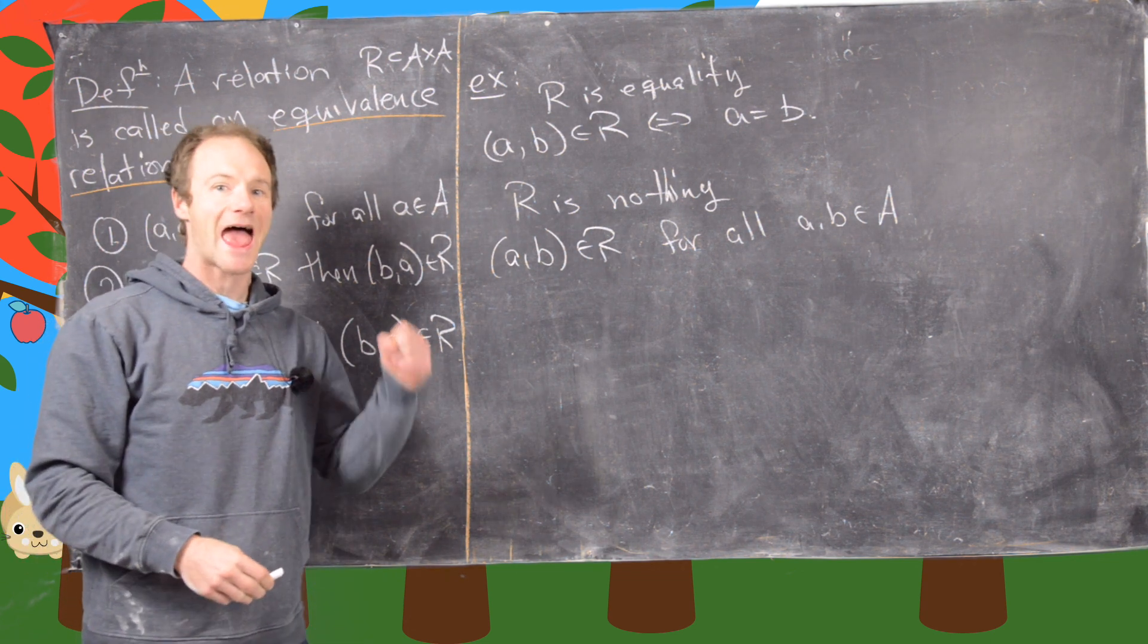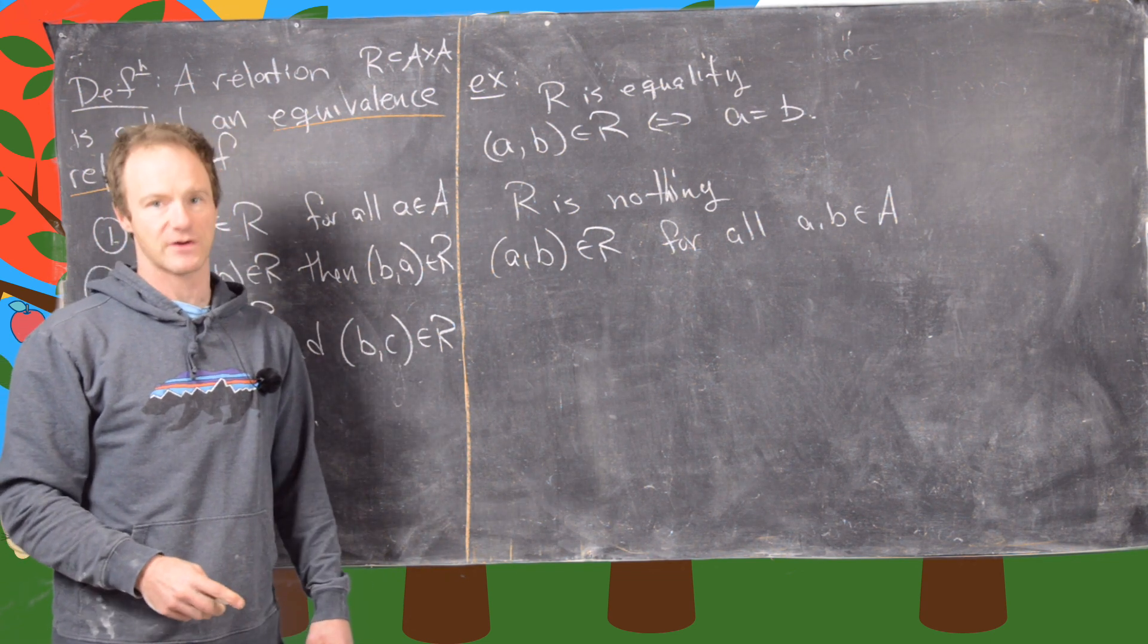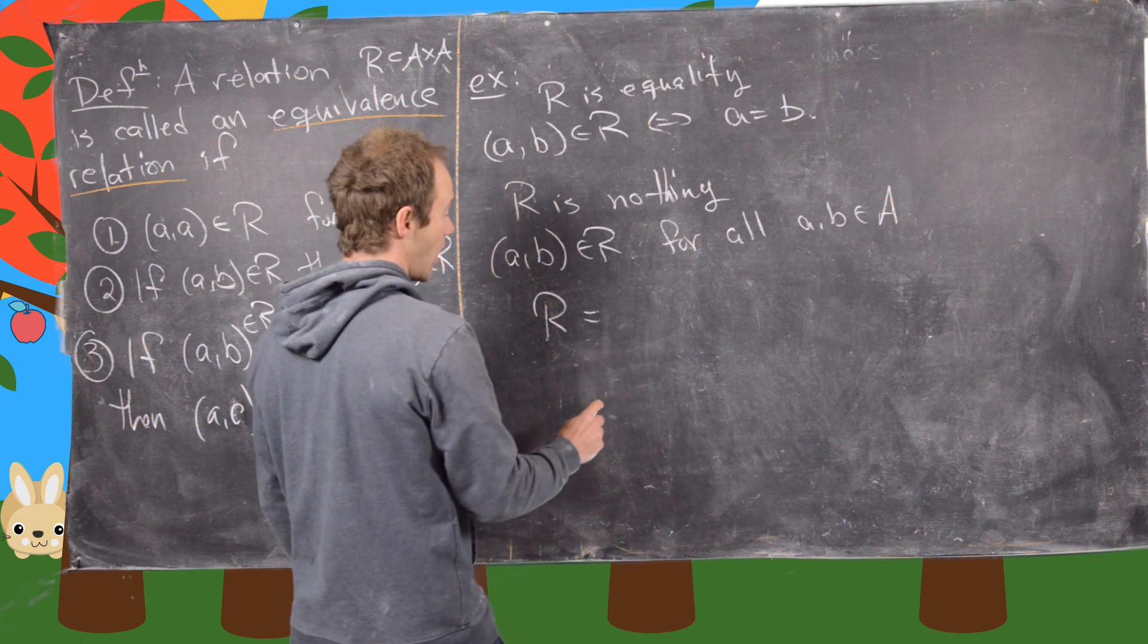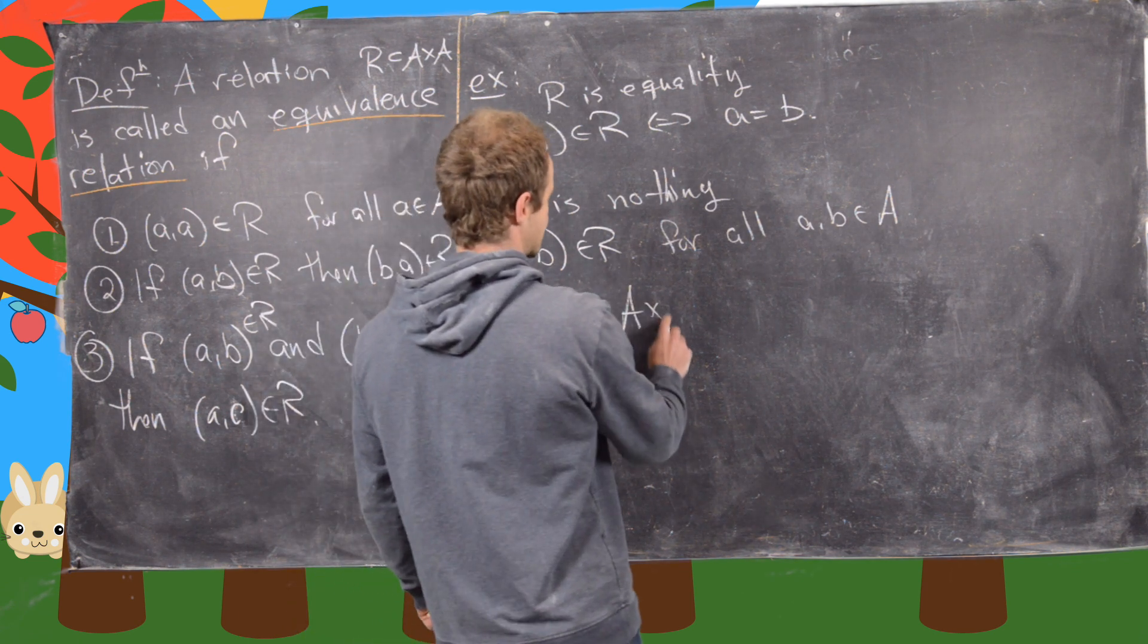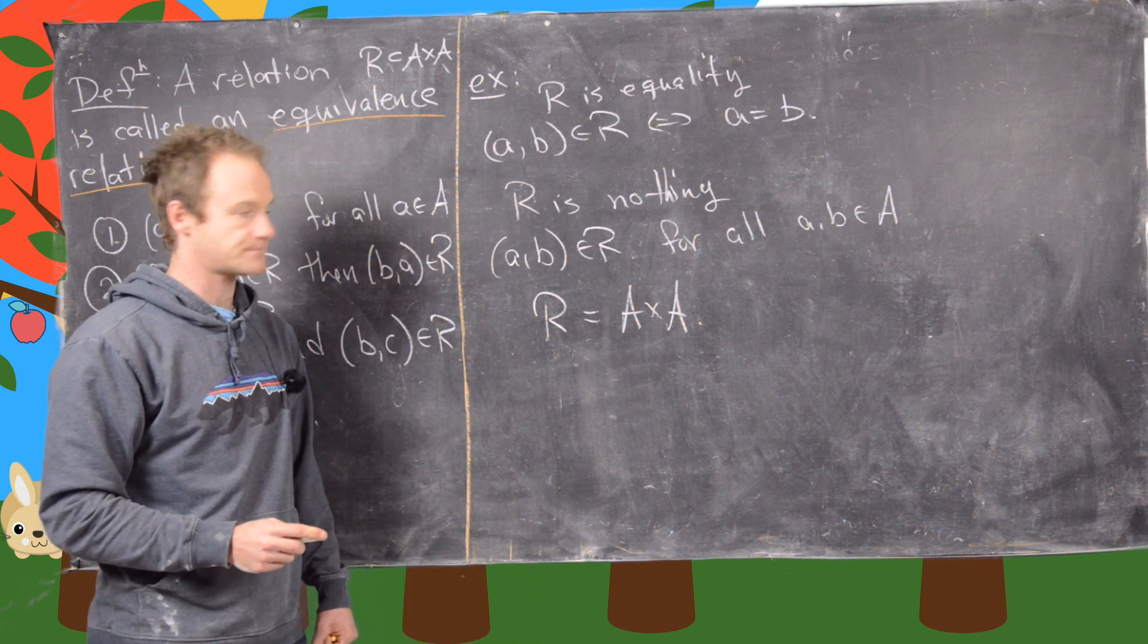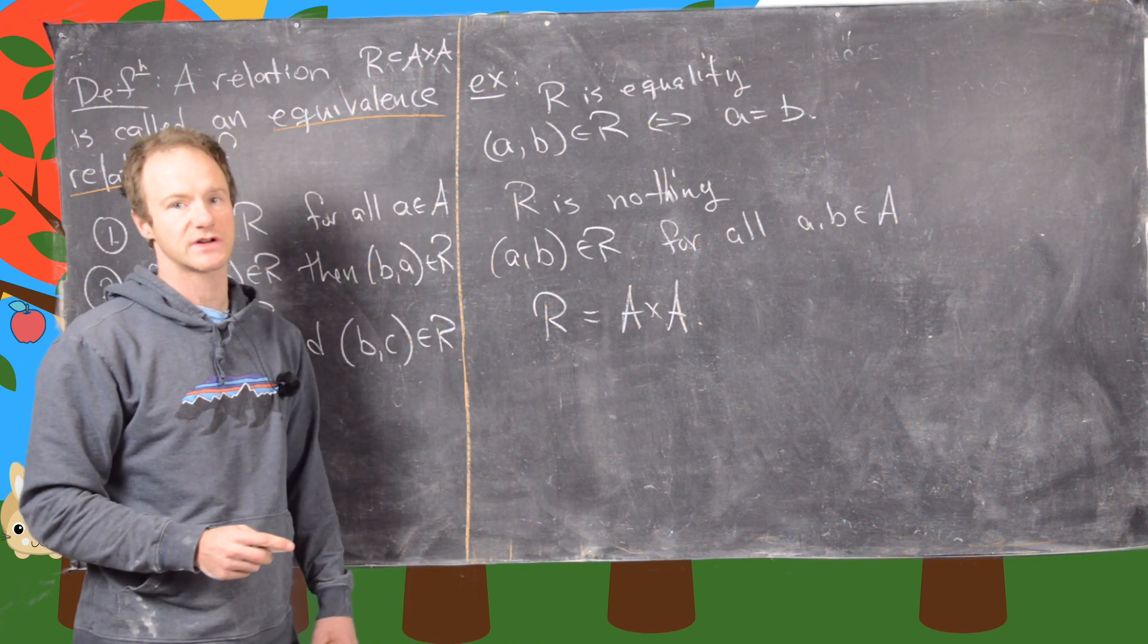So what I mean is everything is related to everything else. So as a set, that means R equals A cross A. It's the largest subset of A cross A. So this is definitely an equivalence relation.